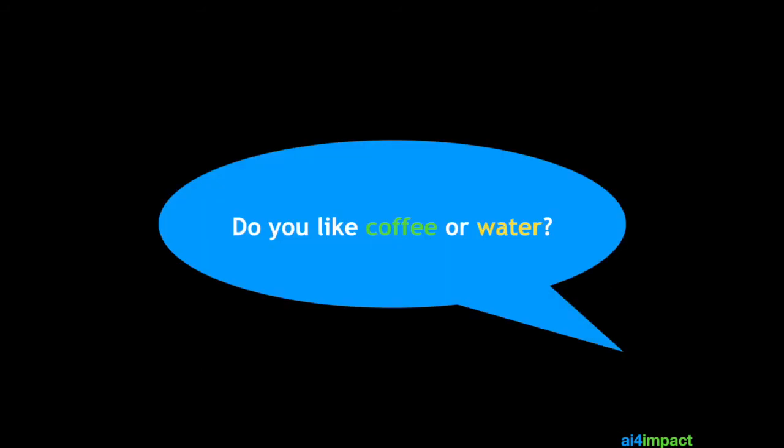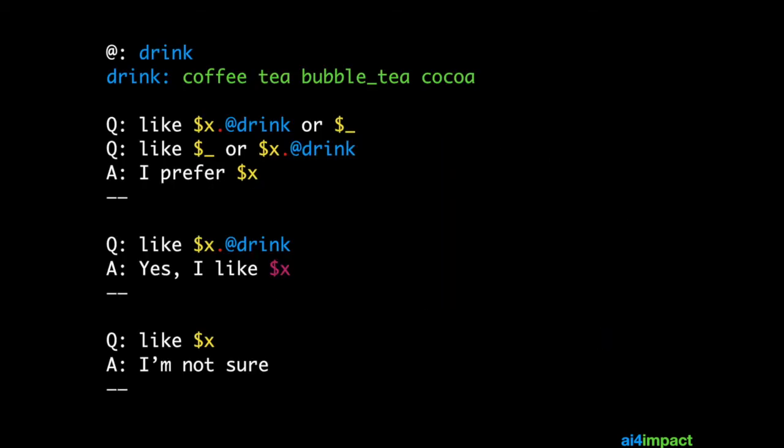Now, what if your user asks a question like do you like coffee or water? How would you handle that? Well here I've amended it so that you want to check if the first is a drink or perhaps the drink is said in the second position.